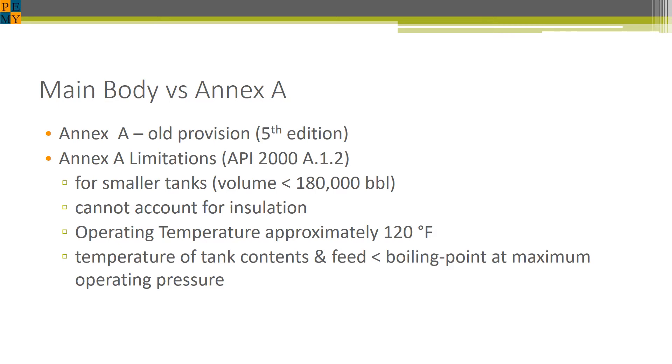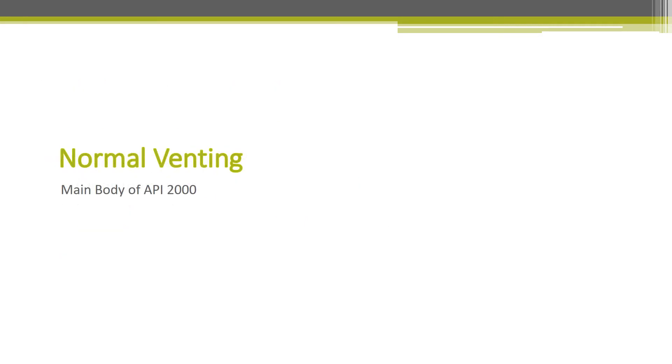Annex A can still be used under various limitations. It can only be used for smaller tanks, it cannot account for insulation, and has certain requirements in terms of the temperature that's assumed. In general, tanks that were designed under Annex A have been used by industry for several years with no incidents. However, because of this new research, it is best practice to use the main body at least for newer tanks. It is considered acceptable to use Annex A for existing tanks because these tanks were designed under Annex A.